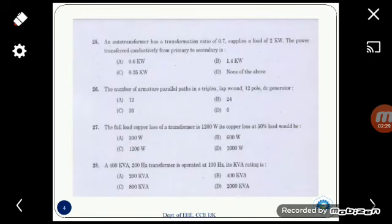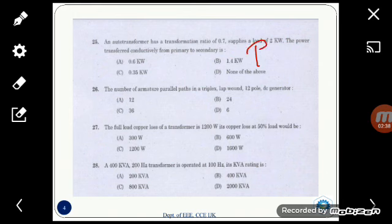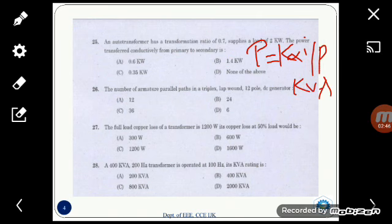Next one is: an auto transformer has a transformation ratio of 0.7, supplies a load of 2 kilowatt. The power transferred conductively from primary to secondary is? So the equation for the power transferred conductively here is P = K × input KVA. So here K is 0.7 and input KVA, we are taking it as input or output KVA. So output load value is given 2 kilowatt, so 0.7 × 2, so we are getting 1.4 kilowatt. So the answer here is option B, 1.4 kilowatt.